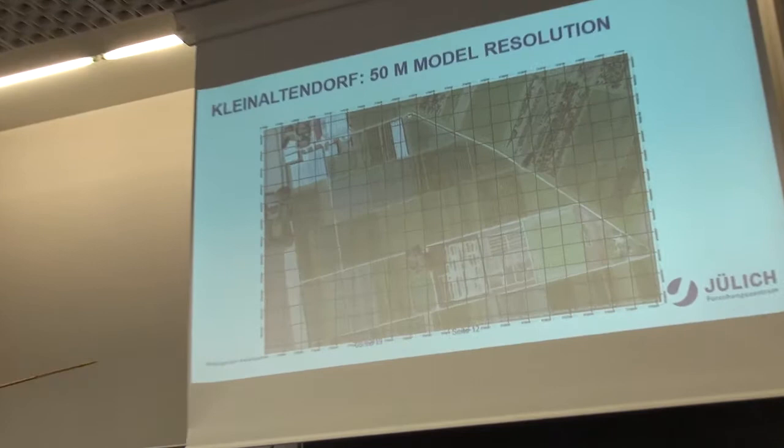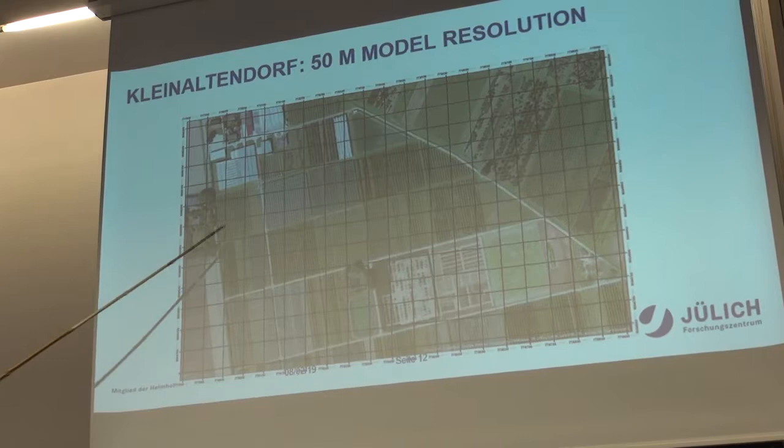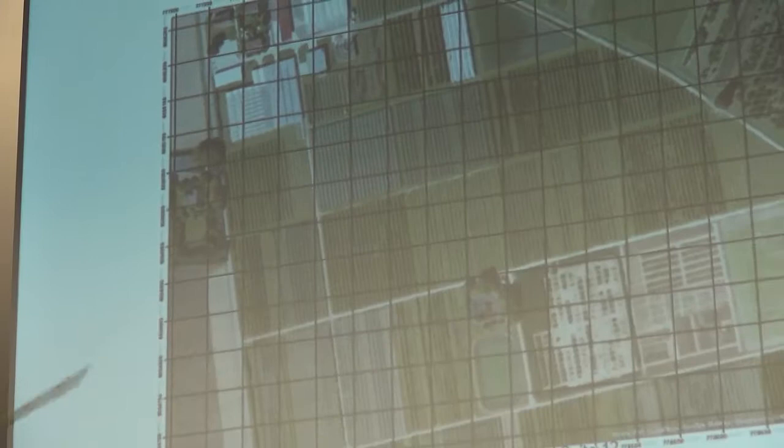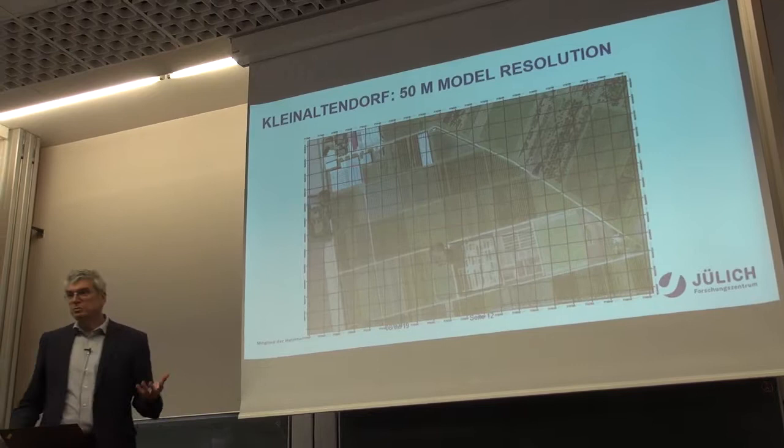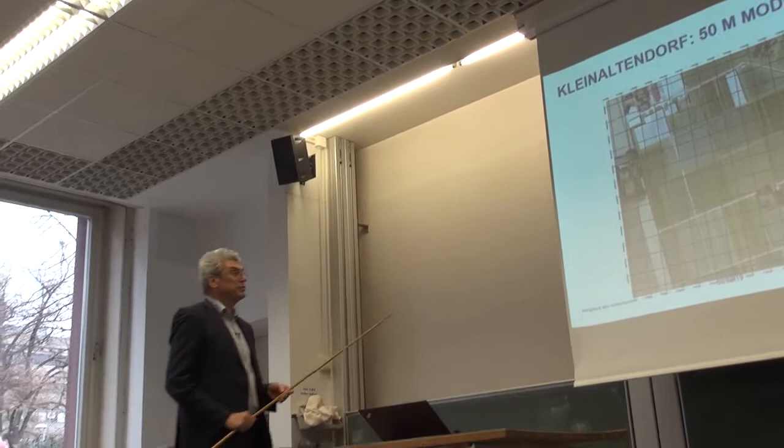This is part of Klein Altendorf with a 50 by 50 meter mesh overlaid. Some pixels fall entirely within one field, while others are mixed. For such a pixel, the simulation platform provides the full state of the subsurface, crop, and atmosphere — mean water content, mean evapotranspiration flux, mean energy balance fluxes, and CO2 respiration over a 50 by 50 meter scale.